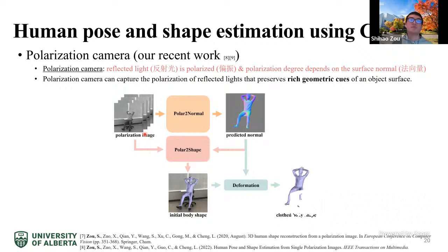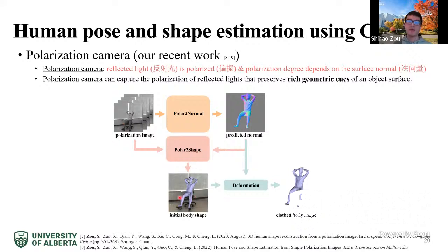These physical laws motivate us to use the polarization camera, which captures polarization of reflected light that preserves rich geometric cues of an object's surface. In our recent work, we propose a pipeline to estimate human pose and shape from polarization images. The pipeline has three components: polar-to-normal (estimating surface normals), polar-to-shape (estimating the parametric shape with 82 parameters), and a deformation step to add clothing surface details to the naked body.